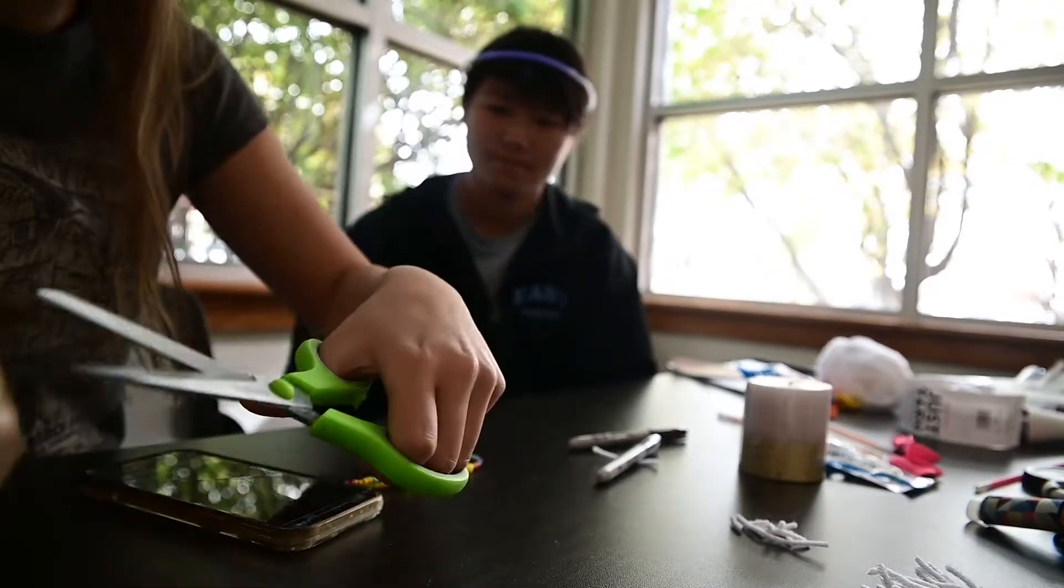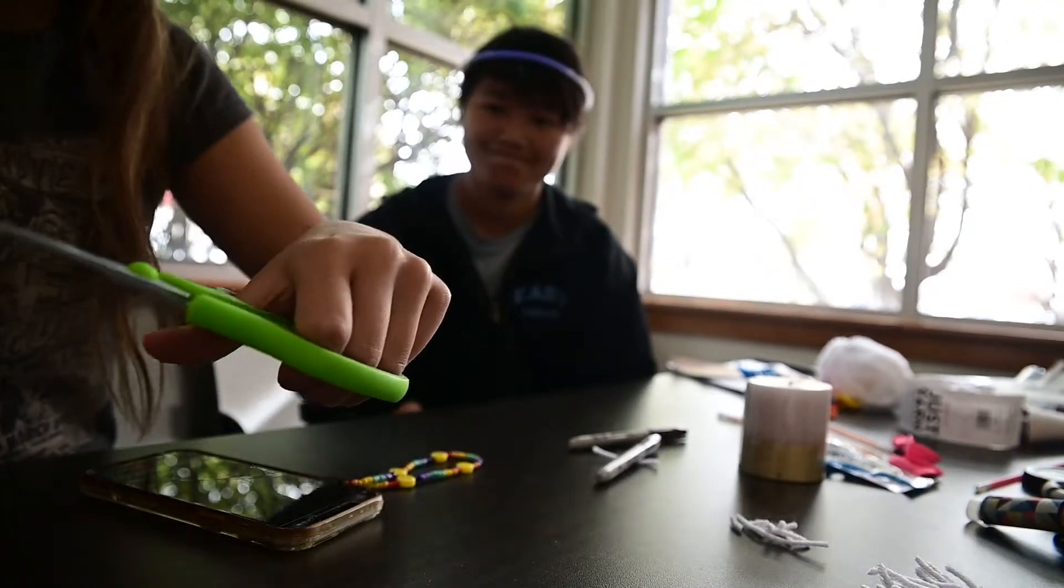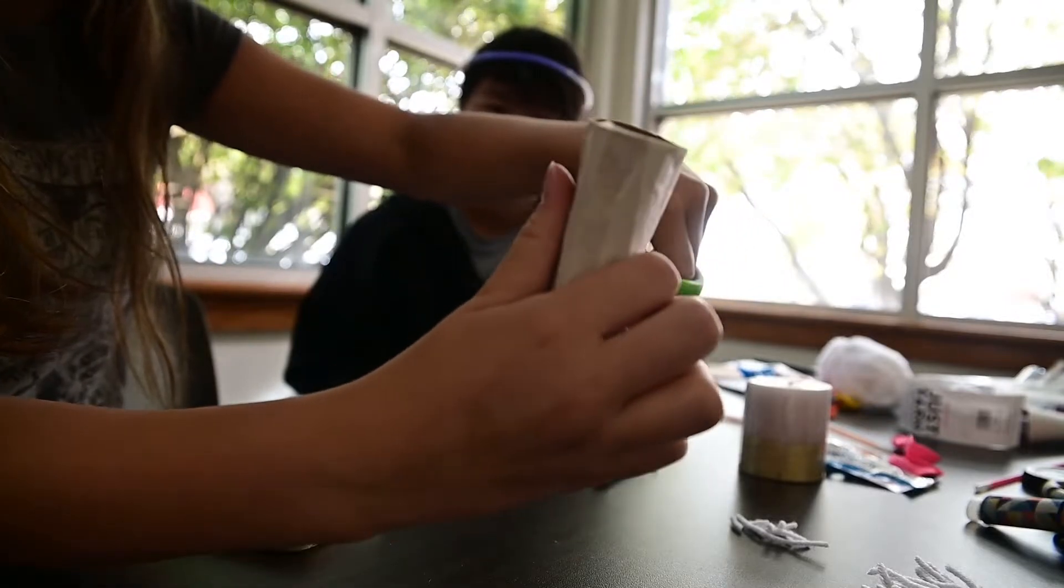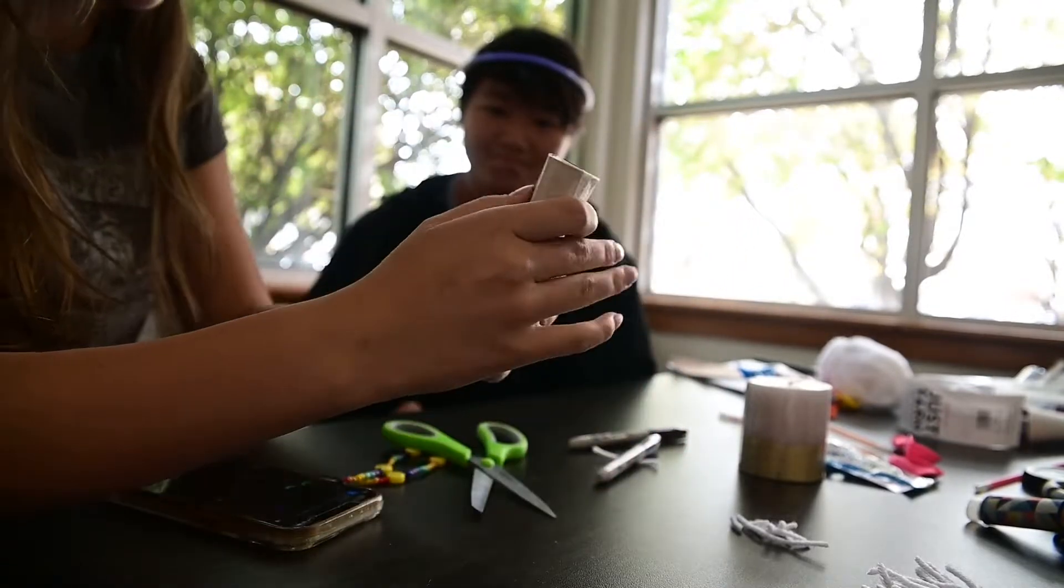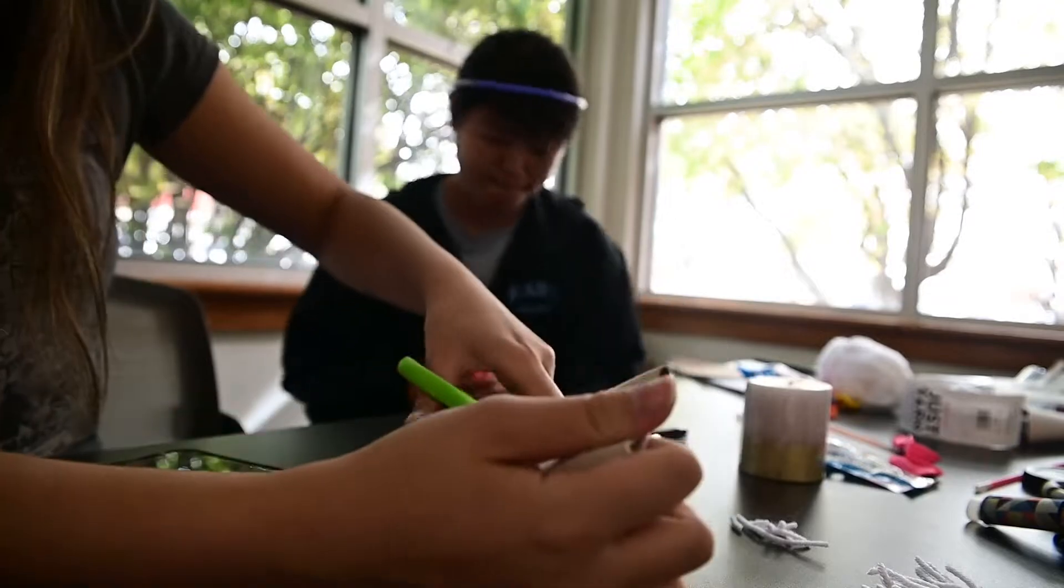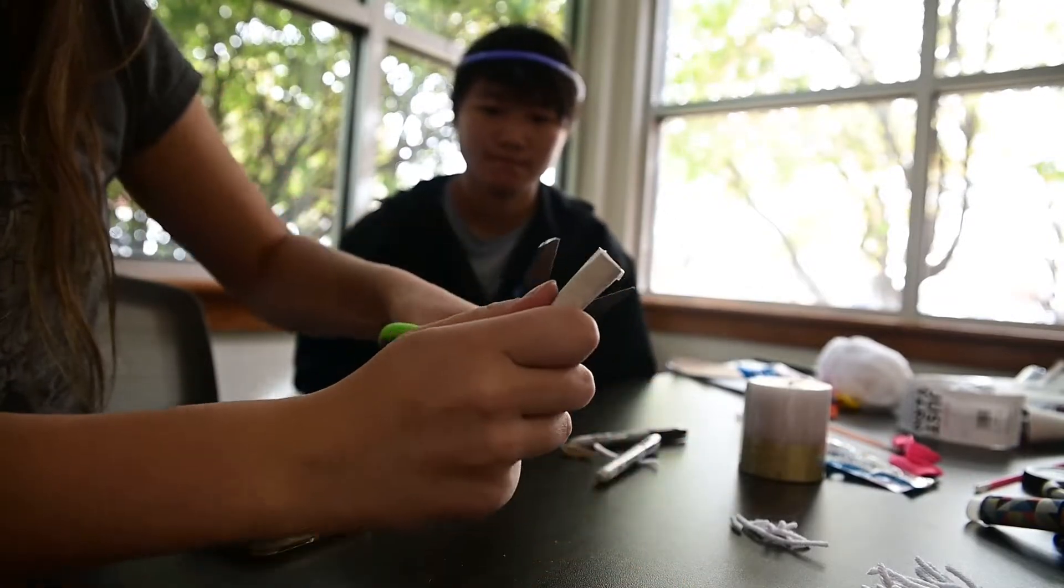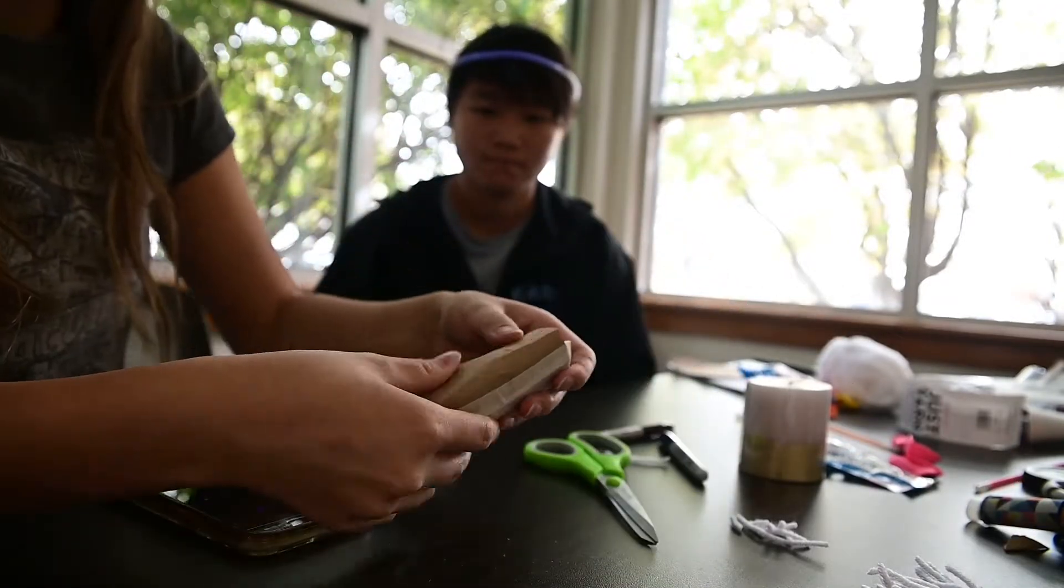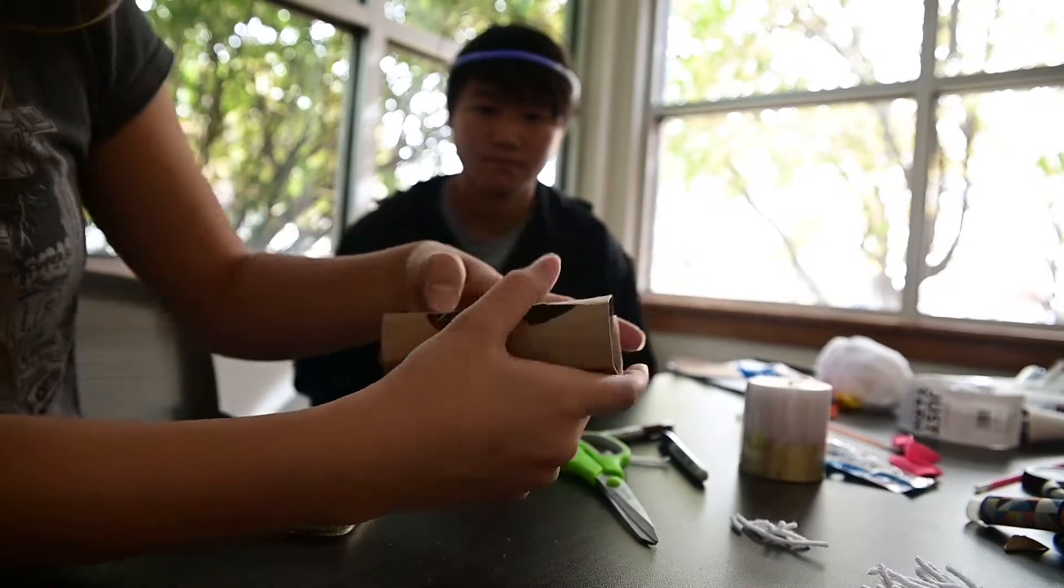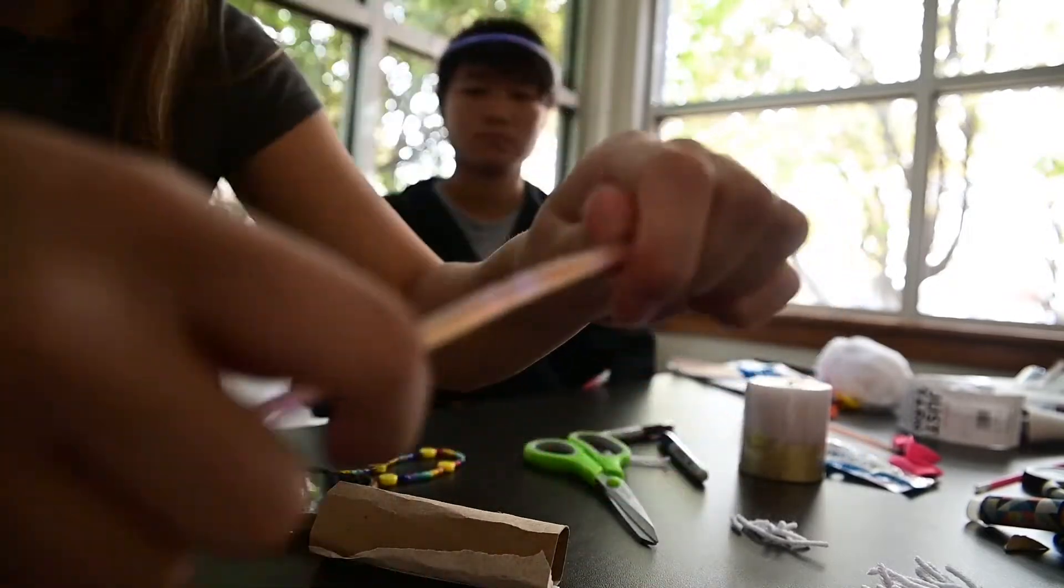We are going to do just like a basic one. And so what you're going to do, you're going to cut into it like this, like how you would with regular paper. Okay, we're going to do it really simple. And then you take your glow stick.